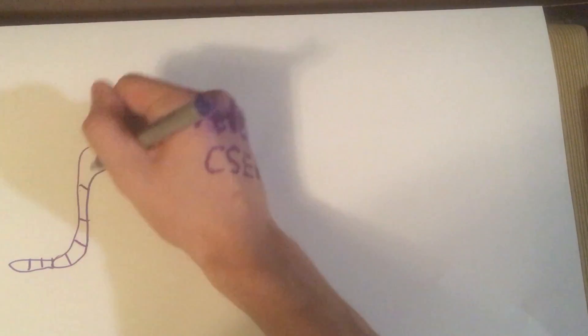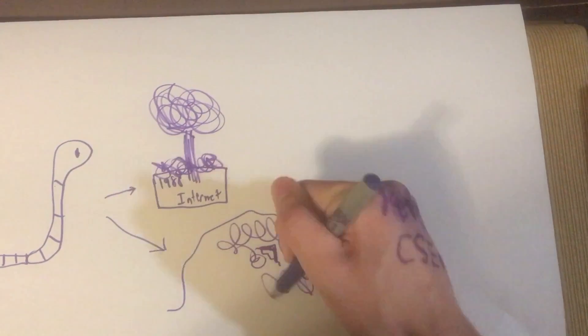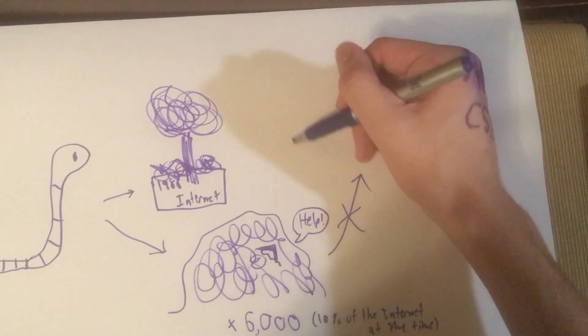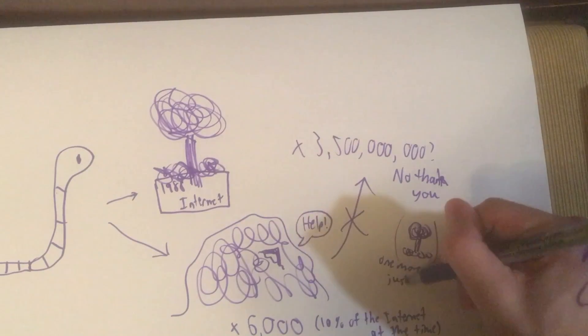So, that's the story of the Morris worm. It brought down the entire 1988 internet, and infected around 6,000 computers. We're lucky nothing quite like it has been created since then. With the sheer number of computers on the internet today, it would be nothing short of catastrophic.